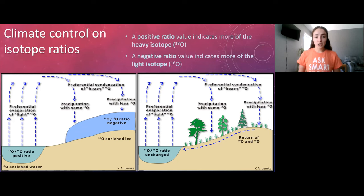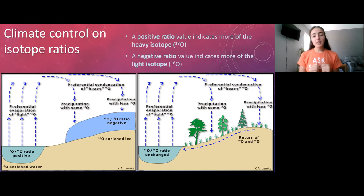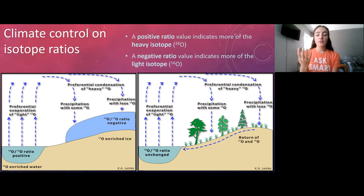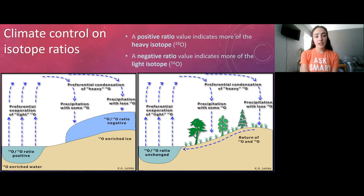This fractionation we can measure and track through different environments today and through time. In a cold climate, it's not warm enough to evaporate much oxygen-18, so evaporation is mostly oxygen-16. The rain from those isotopically light clouds further depletes them in oxygen-18. As those clouds migrate to the poles, ice sheets and glaciers become very light in oxygen isotopes.